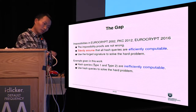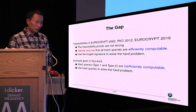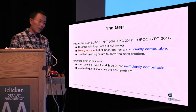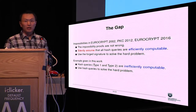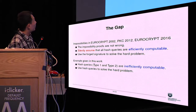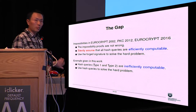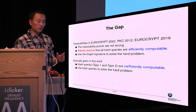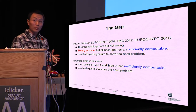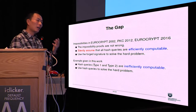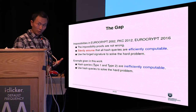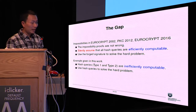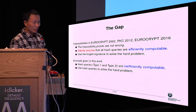So where is the gap between the impossibility and possibility? First, the impossibility proofs in the previous three works are not wrong. They silently assume that all hash queries are efficiently computable, so only the forged signature can be reduced to solving a hard problem. In our construction, we define special hash queries — type 1 and type 2 — that are not efficiently computable because they contain block signatures, and block signatures are hard to compute without the secret key. We then use these hash queries to solve the underlying hard problem. This is the gap between the impossibility and the possibility.